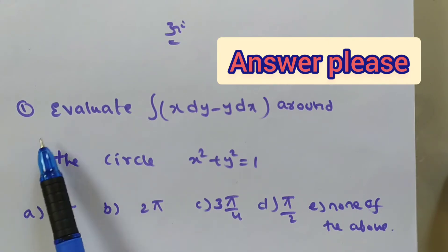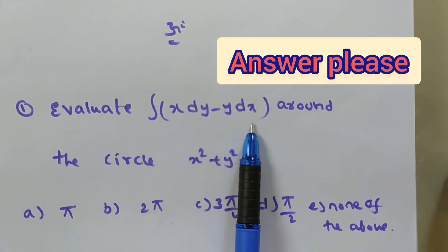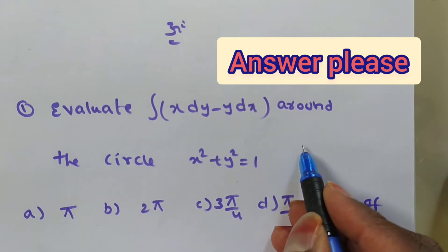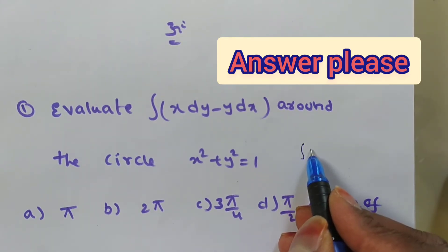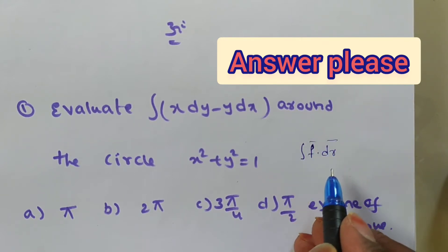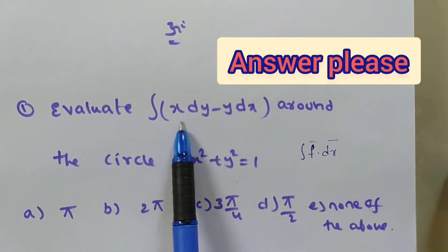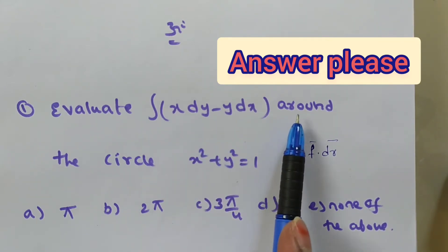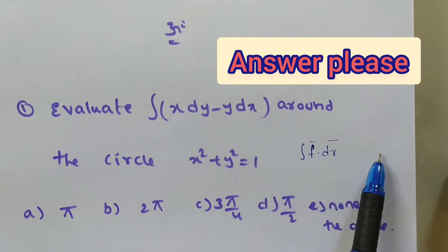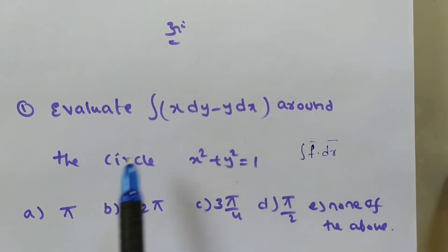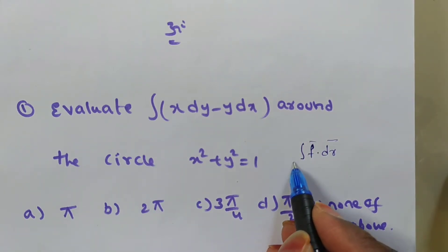Evaluate integral x dy minus y dx around the circle x² + y² = 1. Here you observe — till now we solved problems like evaluate or work done, or problems in the form of f̄ · dr̄ where f̄ and dr̄ are given separately. But here, f̄ · dr̄ is given directly, and we are working around the circle — a unit circle.